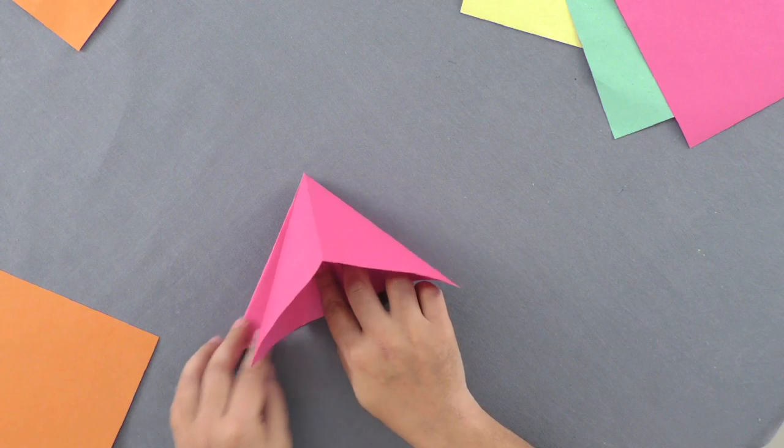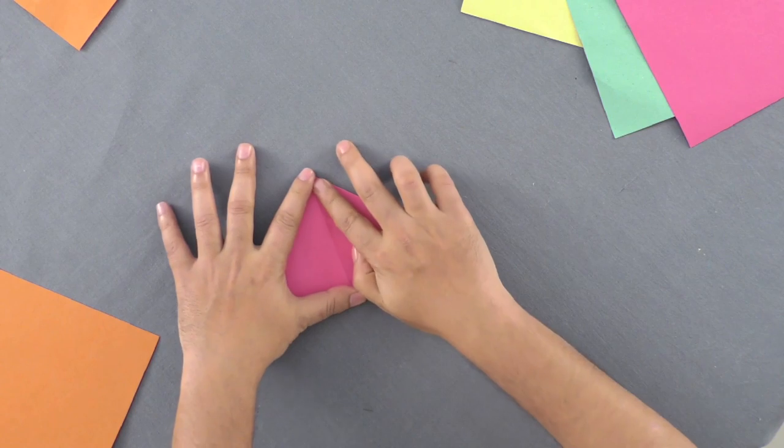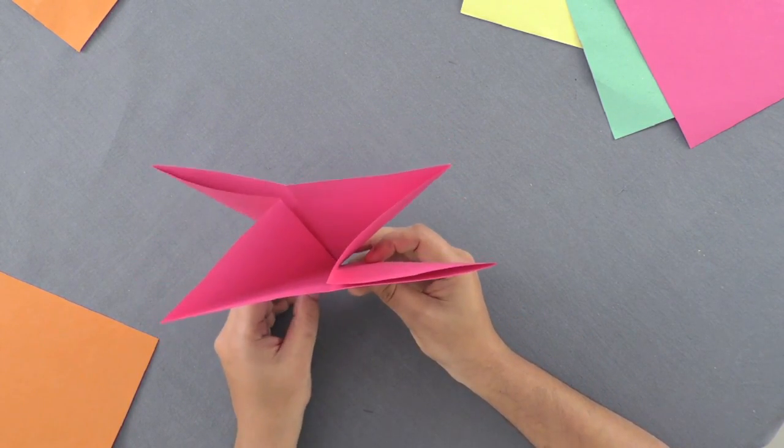For the left half of the paper, repeat these steps to make triangles. Now you have just got a double folded triangle.